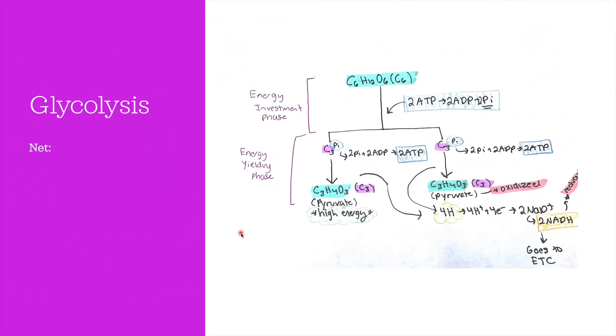Now let's go into the process of glycolysis. Glycolysis can be divided into two stages: the energy investment phase and the energy yielding phase. Each phase occurs in five steps.